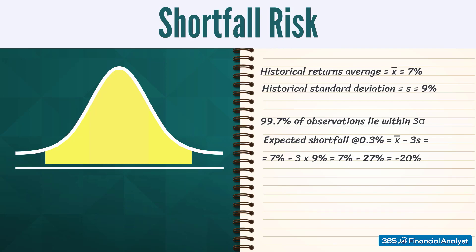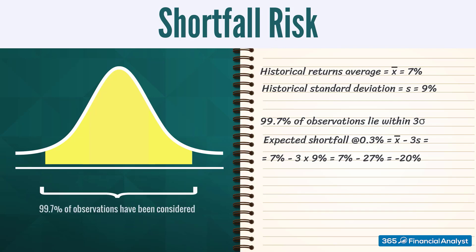We're considering an event that has a 0.3% chance of happening. 99.7% of the observations in the normal distribution are being excluded. That's a 3-sigma event, and hence we multiply by 3.